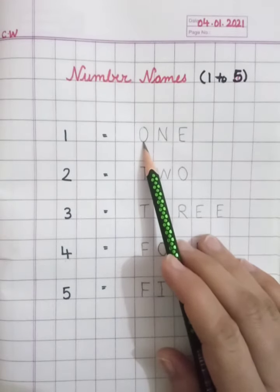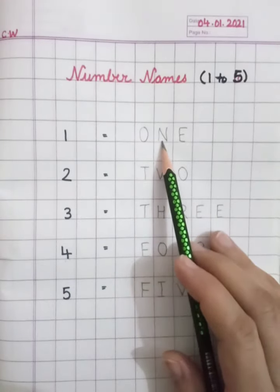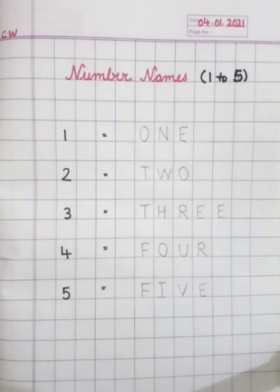O in one box, N in one box, E in one box. Okay, so thank you. And you have to write like this in your math notebook. Bye-bye.